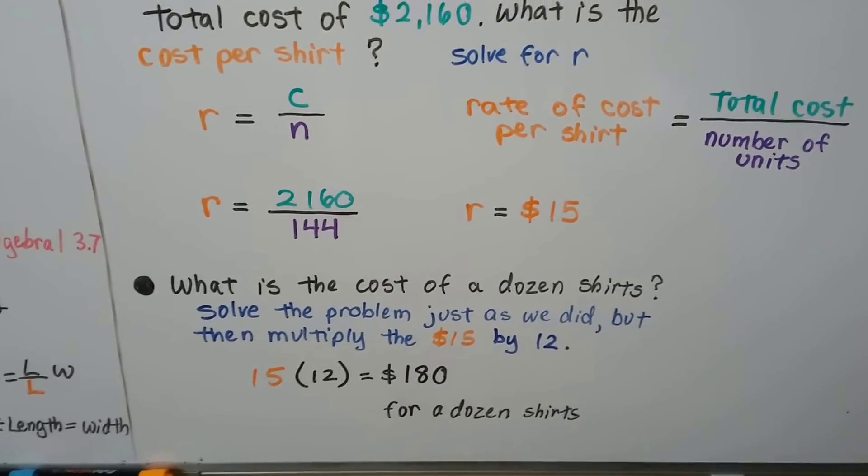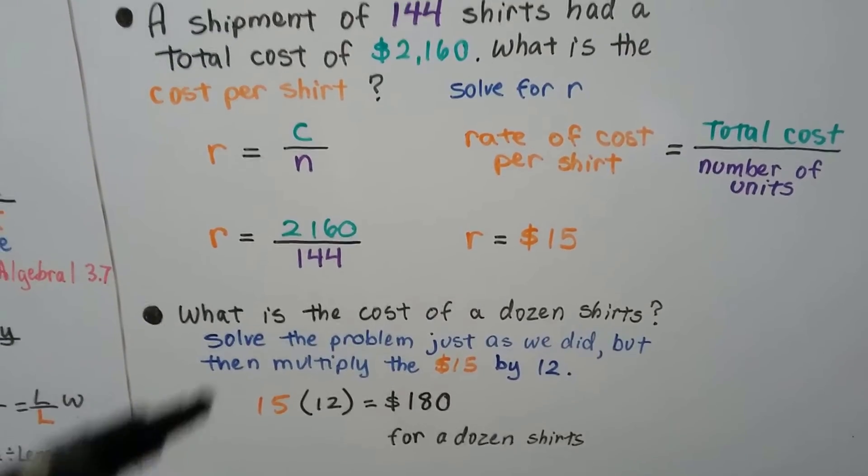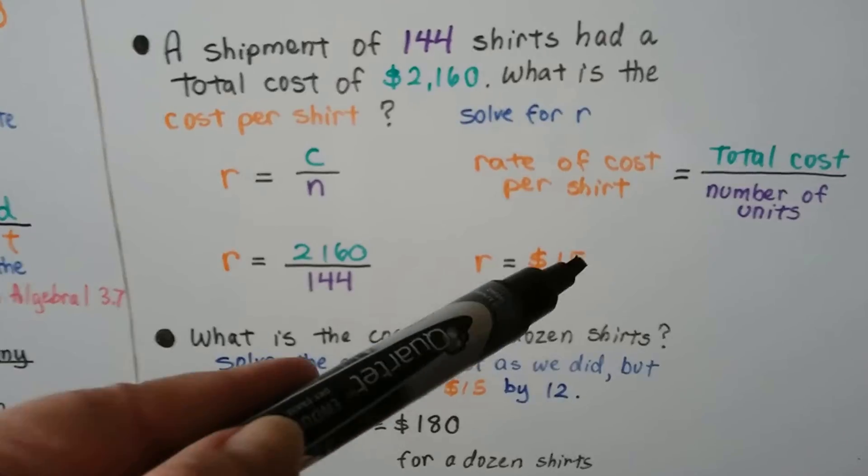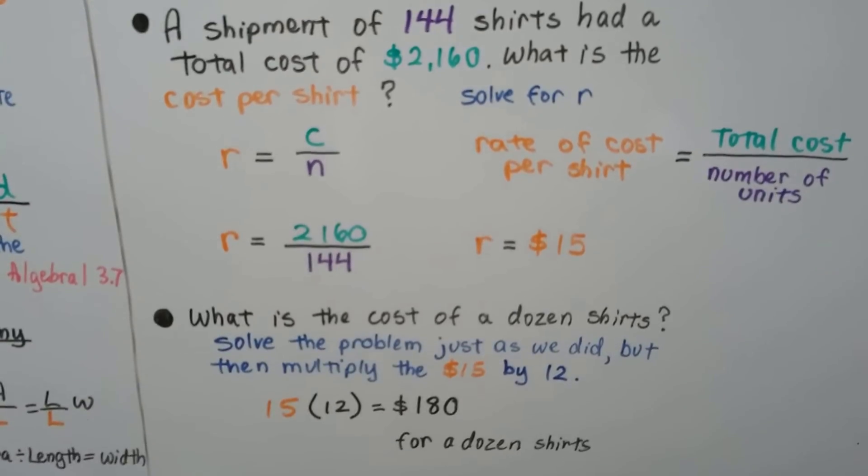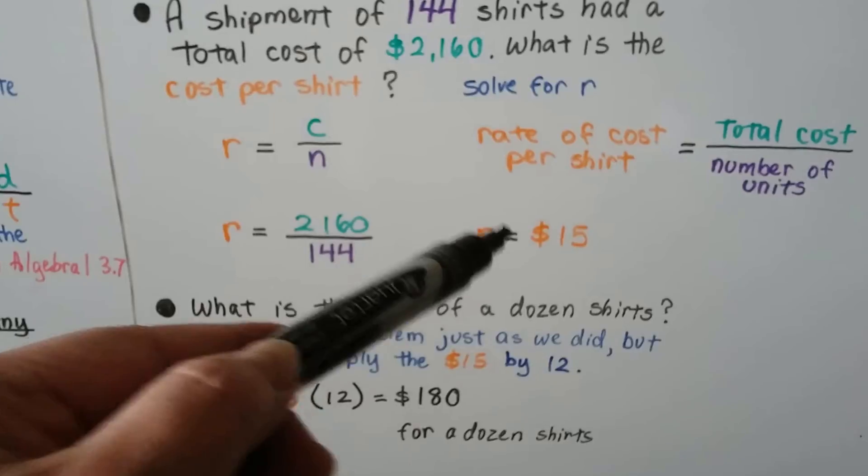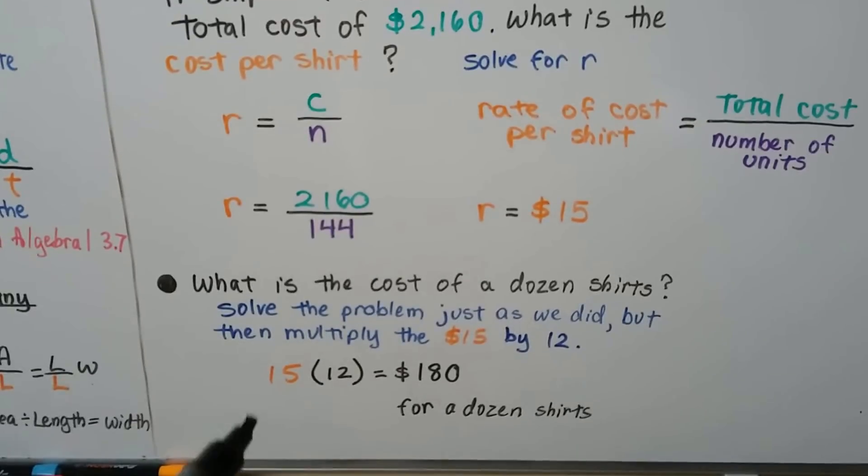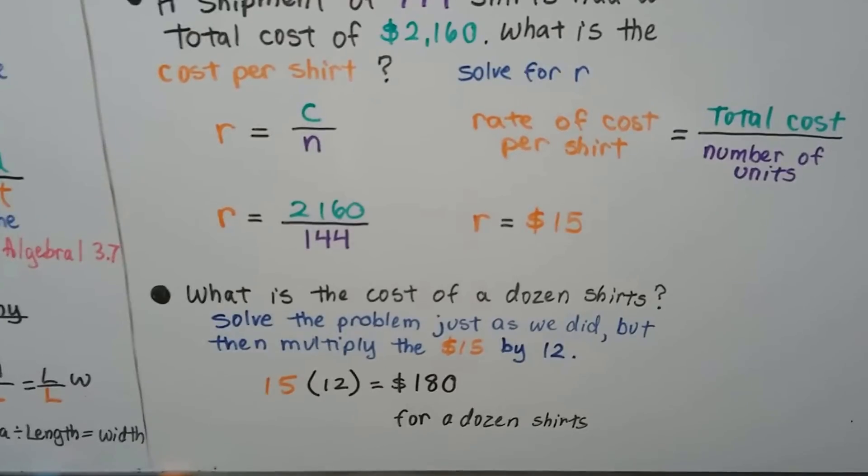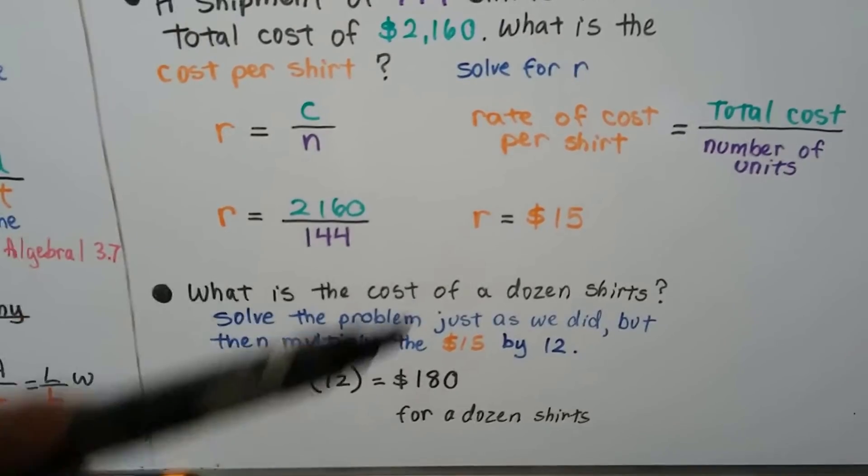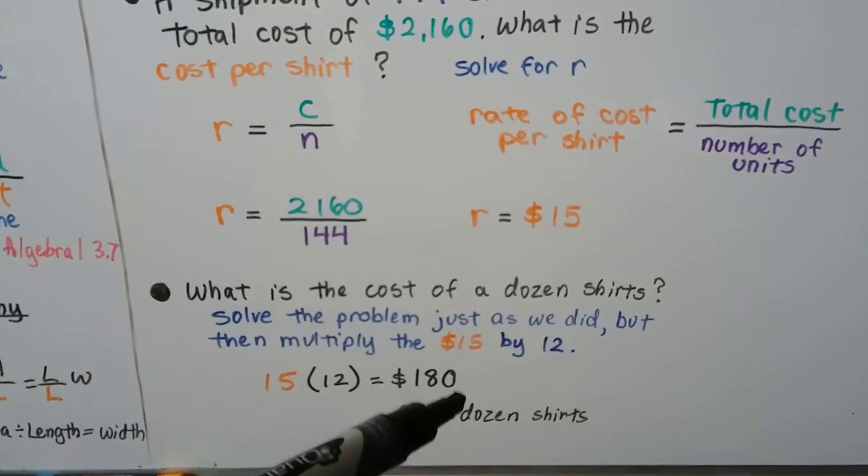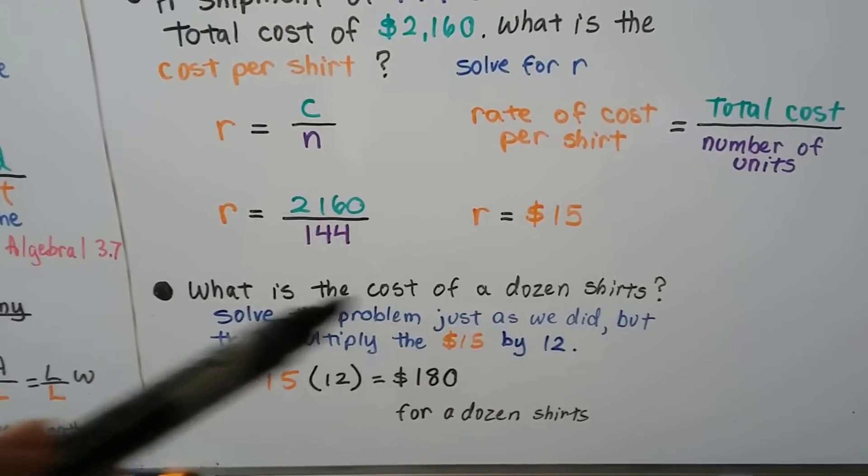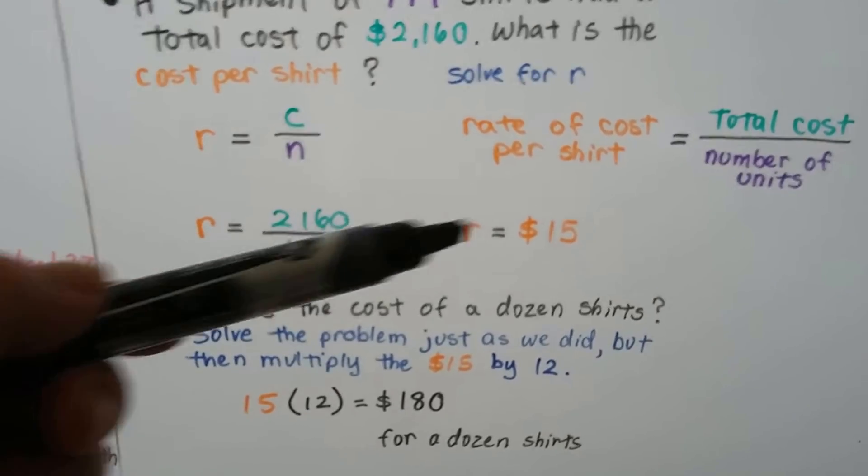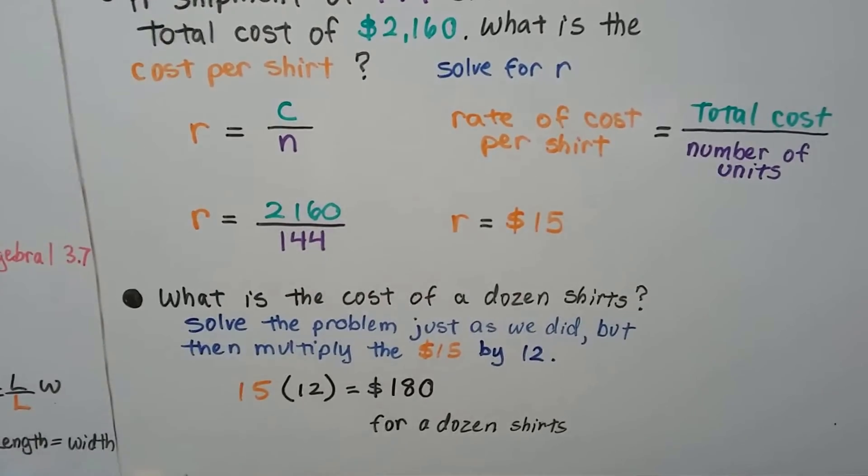And what if it says, what is the cost of a dozen shirts? What if it gives us this and wants to know the cost of a dozen shirts? Well, then that's not the answer. We still need to multiply that by 12. That's per shirt. So the cost of a dozen shirts would be the 15 times 12, or 180. So be very careful on these word problems. They'll trick you, and you'll think the answer is 15, because you didn't completely read what it was asking. It wants the cost of a dozen shirts. So we solved it just the way we did here, but now we had to multiply that by 12.